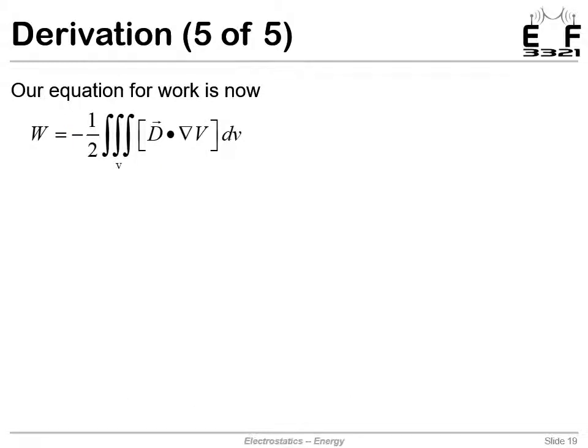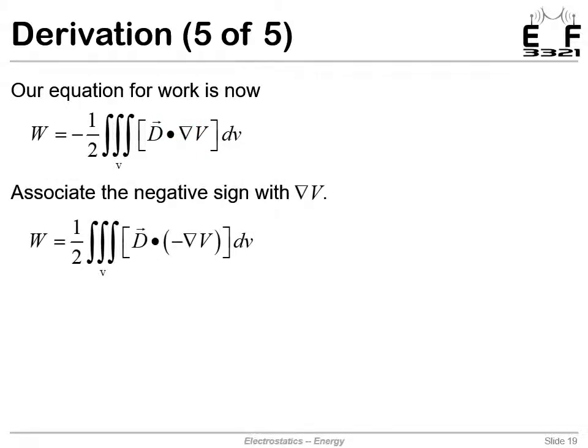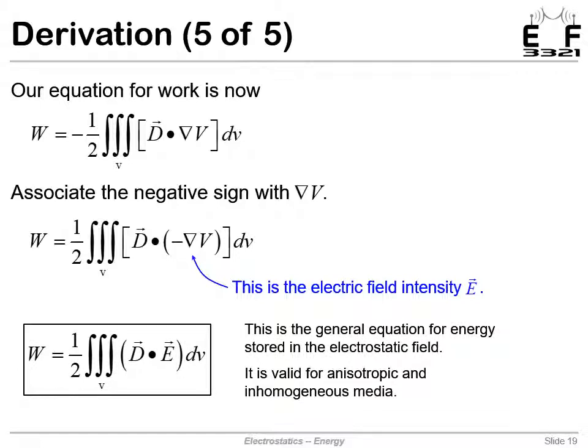We're getting closer. The next thing we want to do is take this negative sign and bring it in and associate it with the gradient of the potential here. Does this look familiar? The electric field intensity E is the negative gradient of the potential. So that is E. In fact, the energy stored in the field is the volume integral of D dot E times differential volume. That equation is valid for anything—for nonlinear media, for anisotropic media, inhomogeneous media. That is always valid. You'll actually rarely see that in textbooks, but you'll see it here.